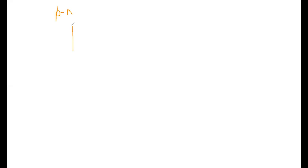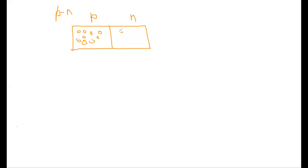Next, we are forming the P-N junction by joining P-type material with N-type material. In the P-type material, majority charge carriers are holes. In the N-type material, majority charge carriers are electrons. When these two materials meet, this point is known as the junction.